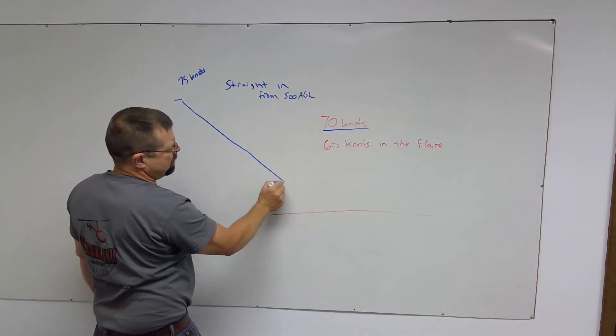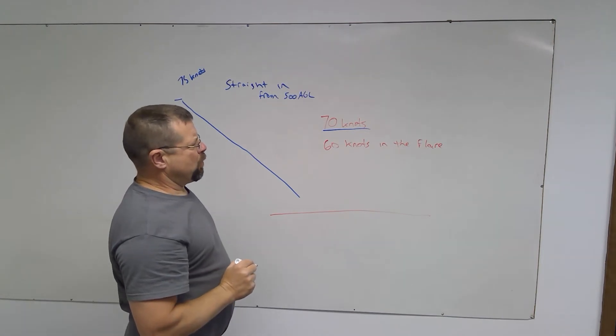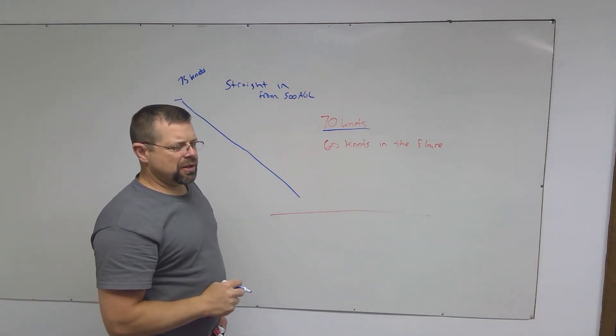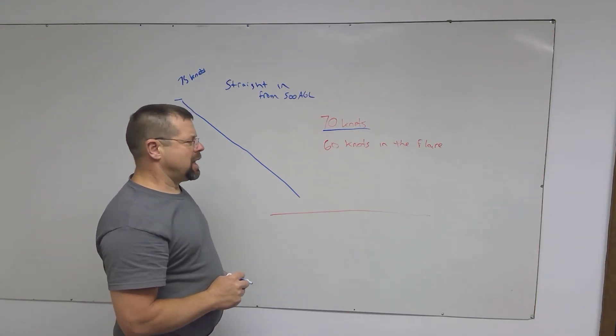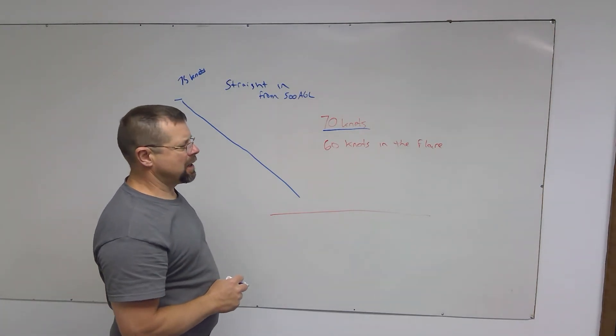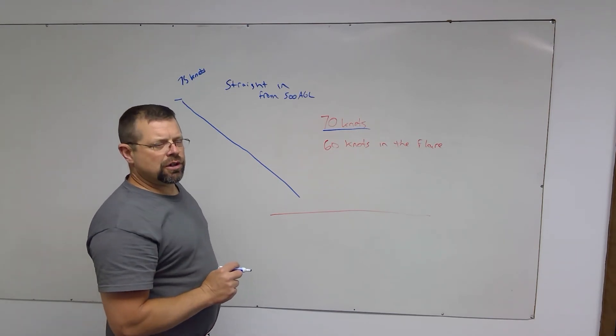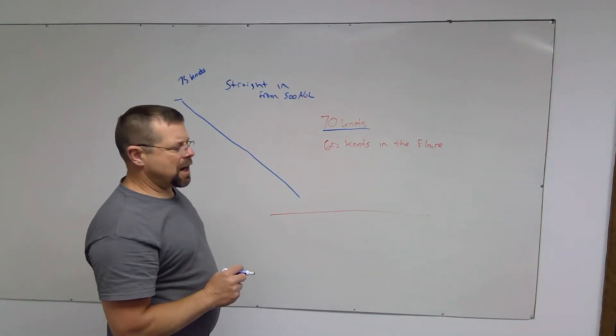You'll hold the RPMs, making very minor changes if needed. One thing people will do is the RPMs might go to the top of the operating range, they see that, and then they pull the collective up a little too far. Now they're at the bottom of the range, and they're pushing it back down. Very minor adjustments, just like when you learn to hover. Don't overcorrect. Very minor adjustments to keep the RPM in the operating range.